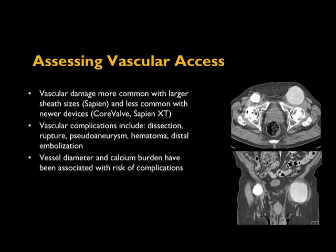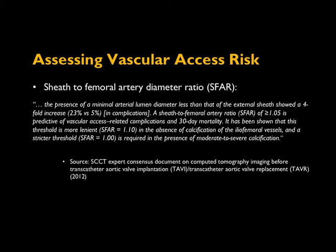Vascular damage was much more common in the early days with larger sheaths. Over time, devices have been streamlined and the risk of vascular injury has decreased considerably. There's a concept called the sheath-to-femoral artery diameter ratio: if the sheath outer diameter is bigger than the artery — a ratio over 1.0 or 1.05 — that's a risky situation. You don't want your sheath to be bigger than your vessel.